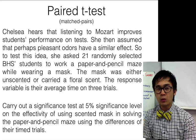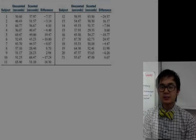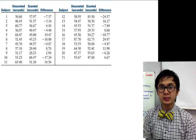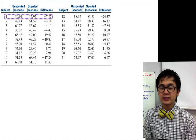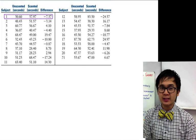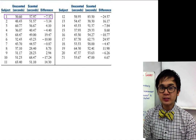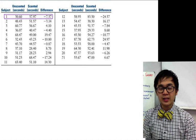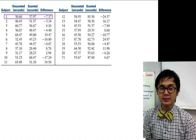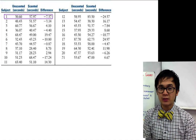Let's analyze the data that Chelsea gathered after asking 21 students to participate in her experiment. Student number one's average time trial in answering the paper maze was 30.60 seconds wearing the unscented mask. After that, she took another test wearing the scented mask, with an average time of 37.97 seconds. The difference of those two time trials is negative 7.37.